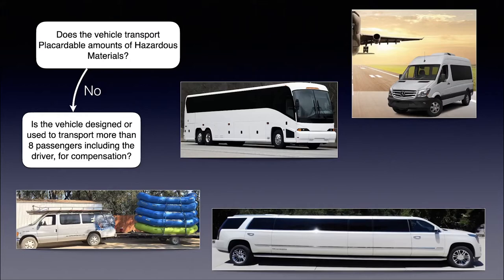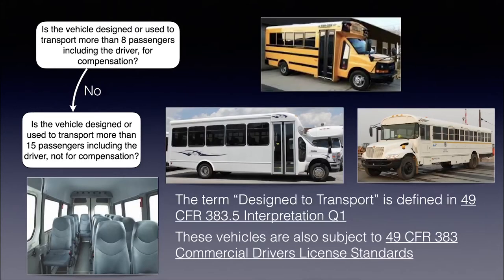If you answer no to that, the next question is: is the vehicle designed or used to transport more than eight passengers — including the driver — for compensation? That's nine or more, and this is for business — think limousines, rafting services, vans, airport shuttles, and passenger coaches. These are all directly paid, for-hire, for-compensation passenger carriers.